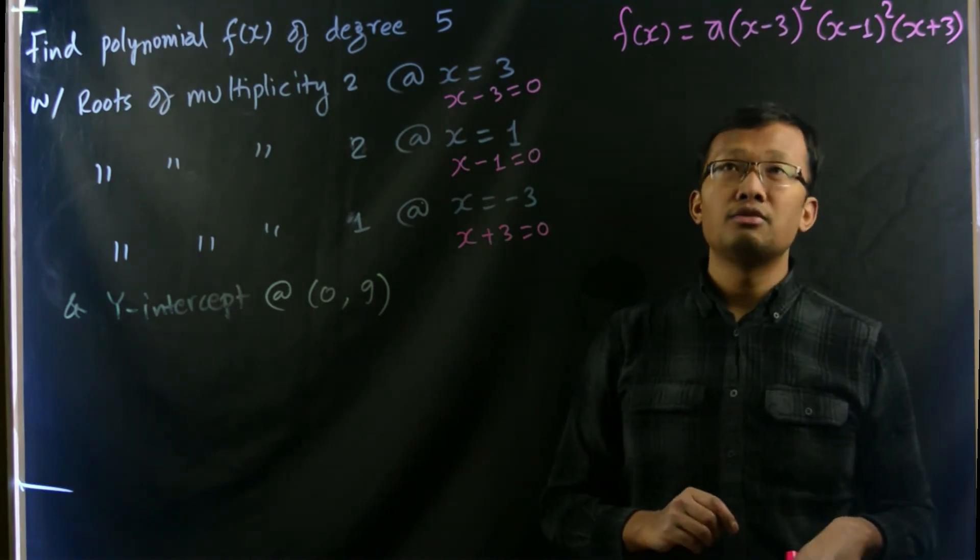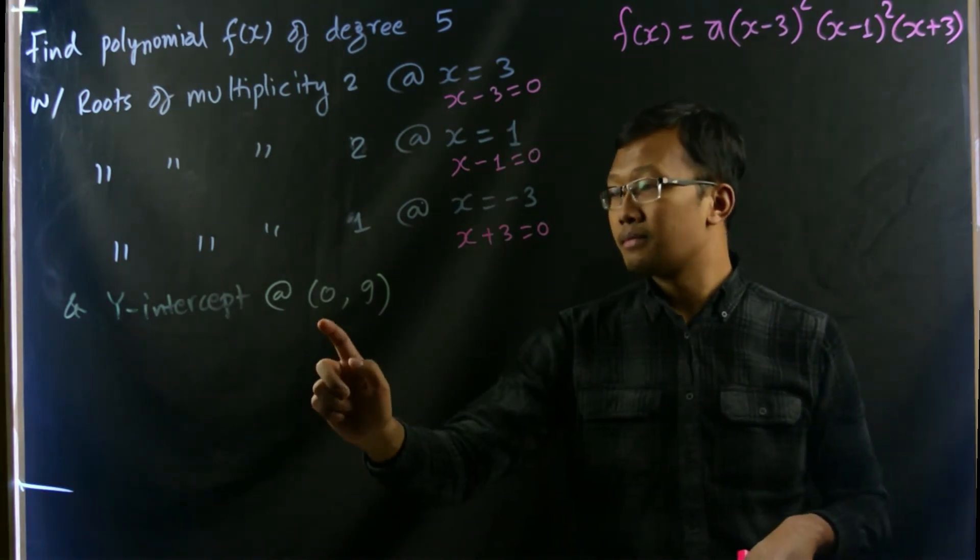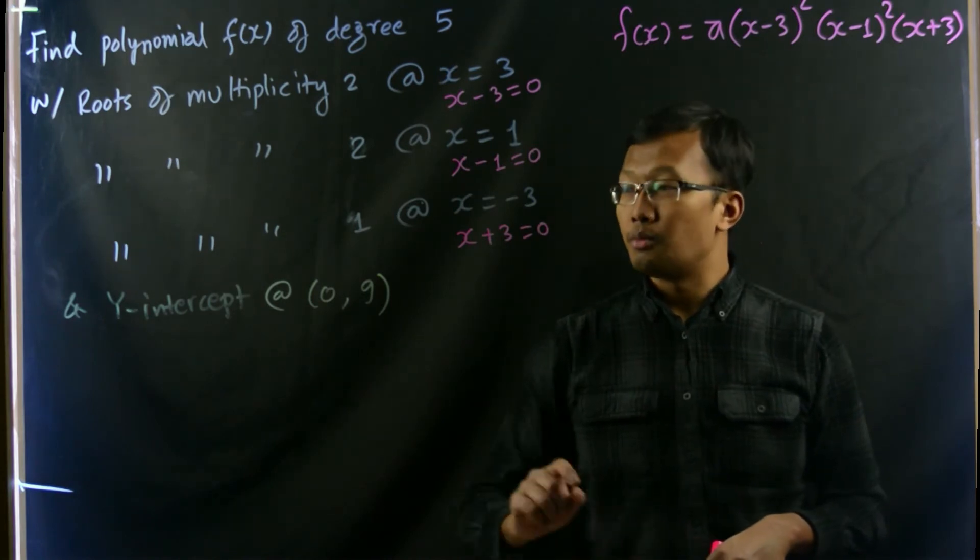The only thing that we need to do now is to find the value of a such that it passes through the point (0,9).